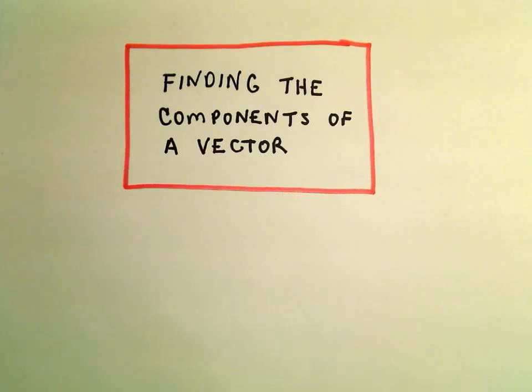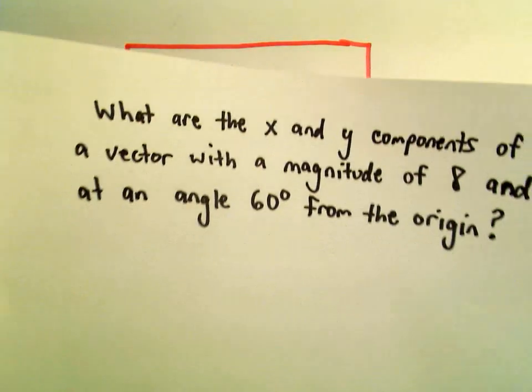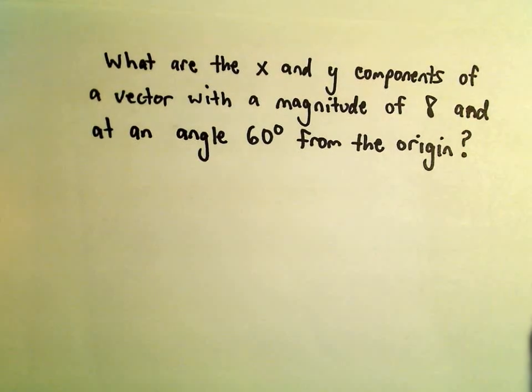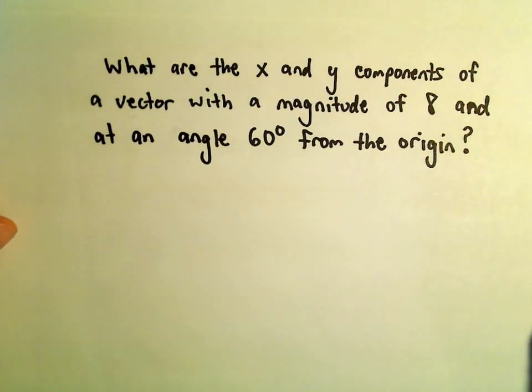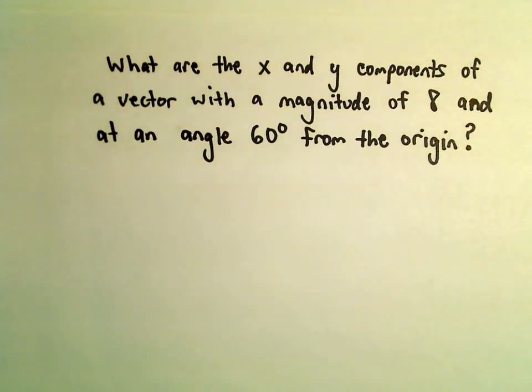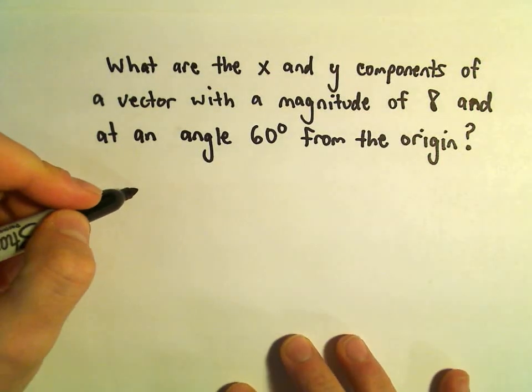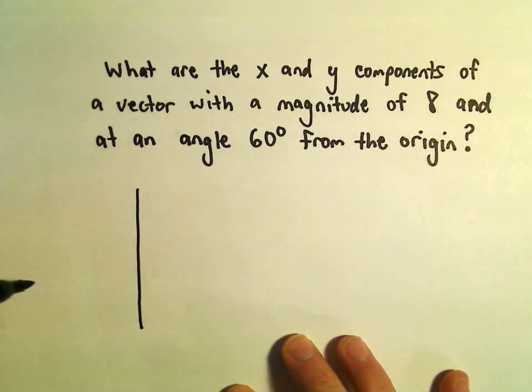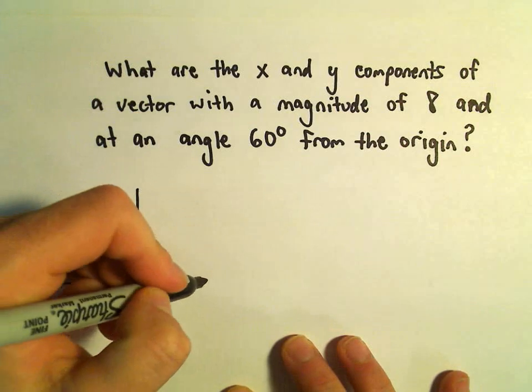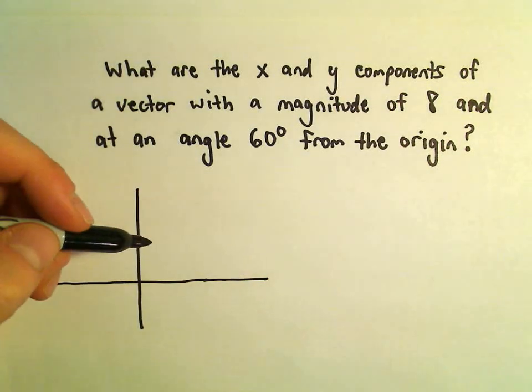In this video I want to talk about finding the components of a vector. We'll be given the magnitude and the direction angle, and from there we'll have to figure out the components. The way I like to do these is just use a little bit of trigonometry.